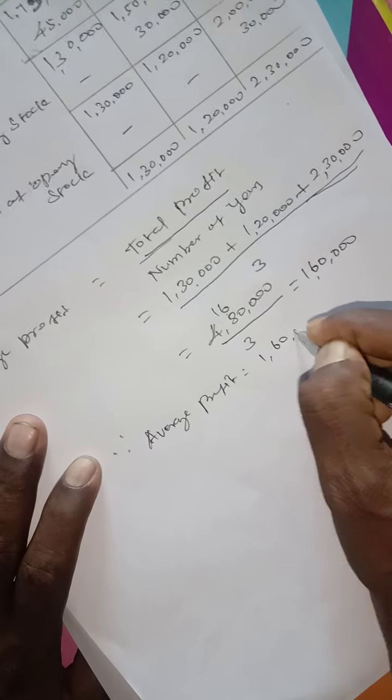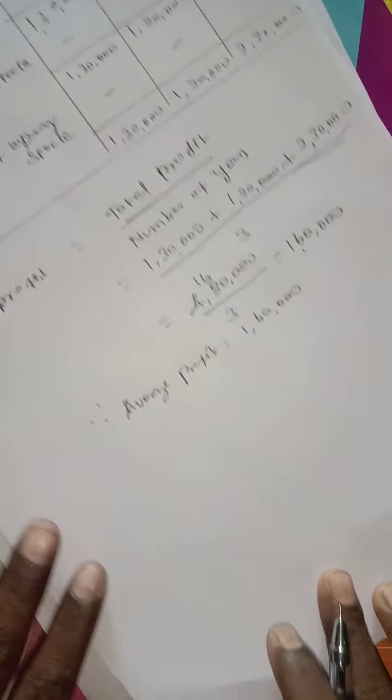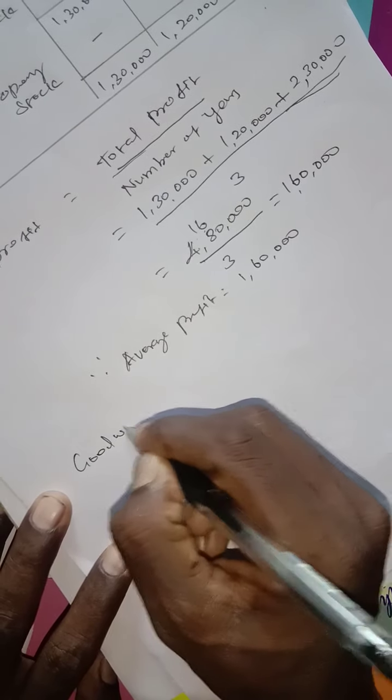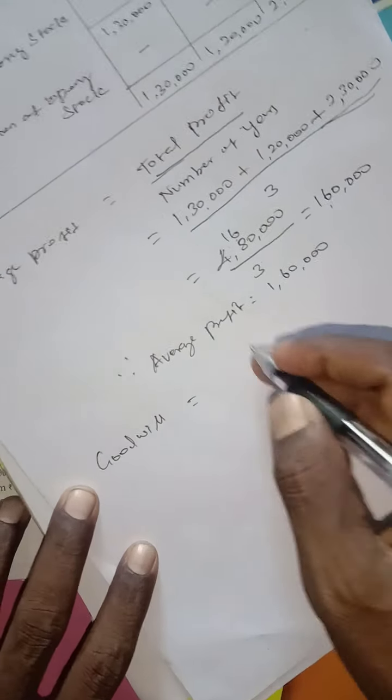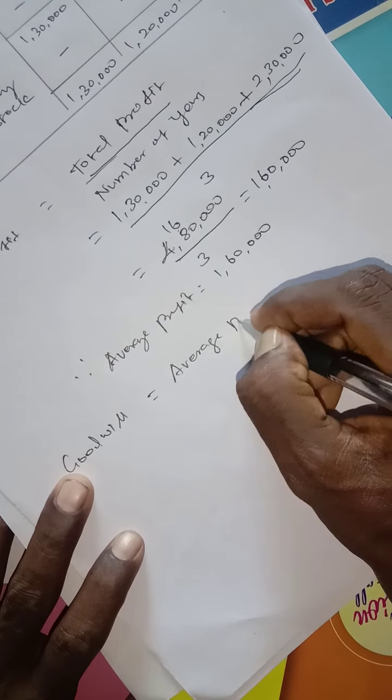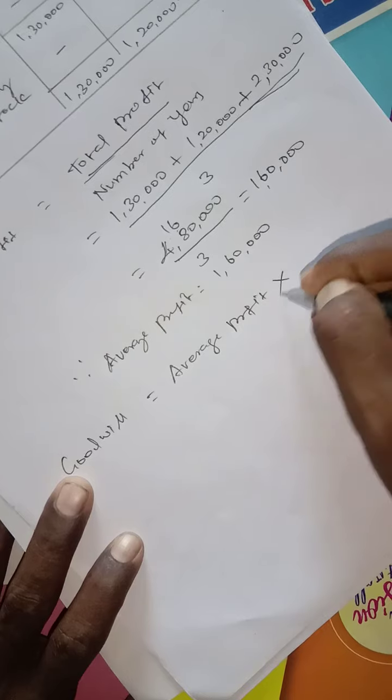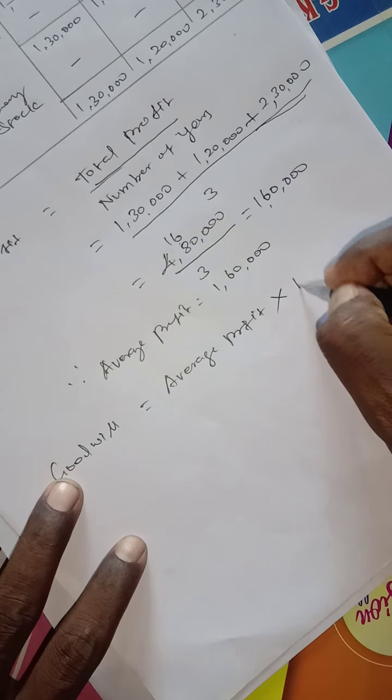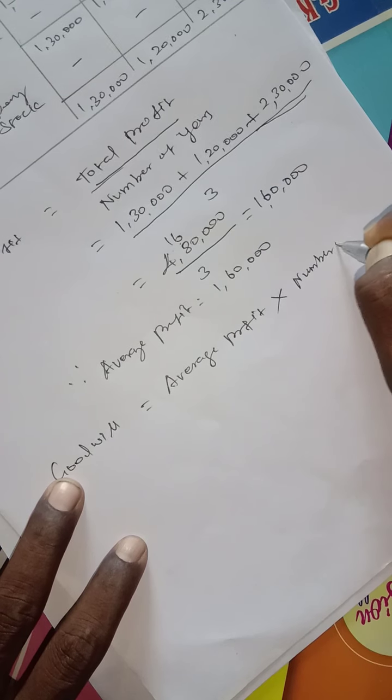Now we can calculate the goodwill. Goodwill equals the number of year purchase.